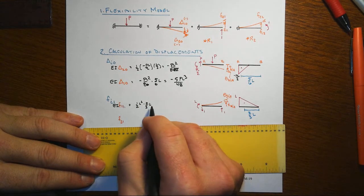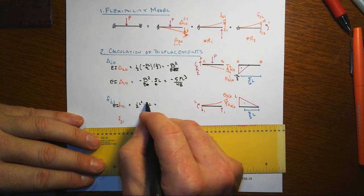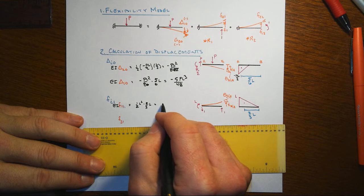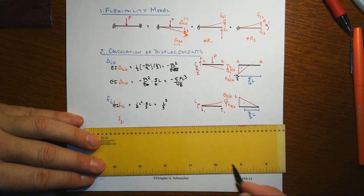And of course in reality divided by EI, but we factor that over. And so now the twos go away, and you get then L cubed over 3.